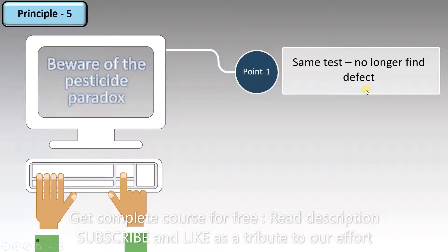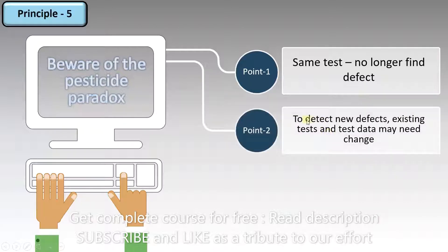So then what do we do? Point 2, to detect new defects, existing tests and test data may need to change. So you either have to update the test case or the data in it to be able to find new defects.